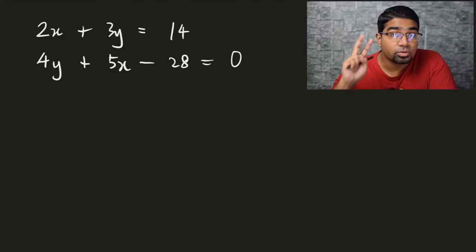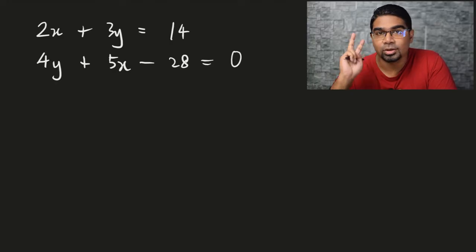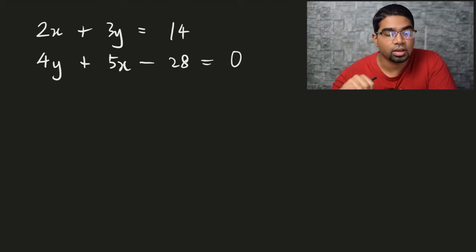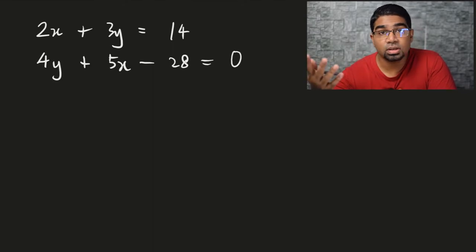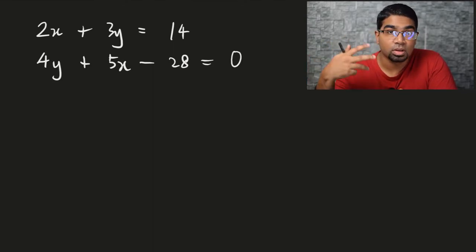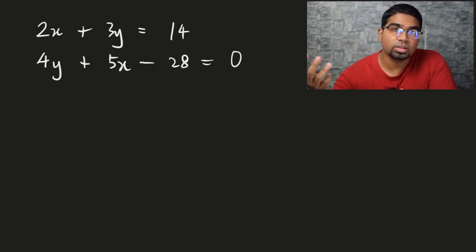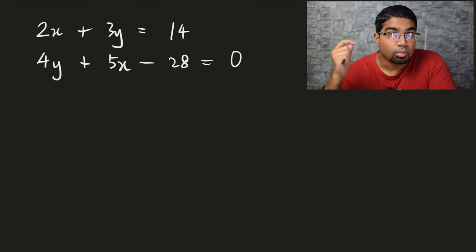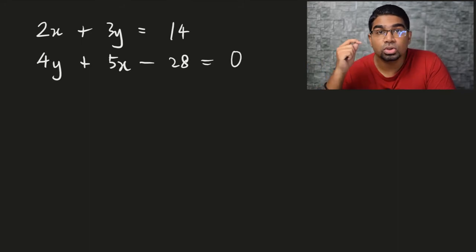Here we have two equations and two unknowns, and therefore they're simultaneous equations. We can use substitution and elimination to solve — that would be the most common method used — but we can also use matrices.